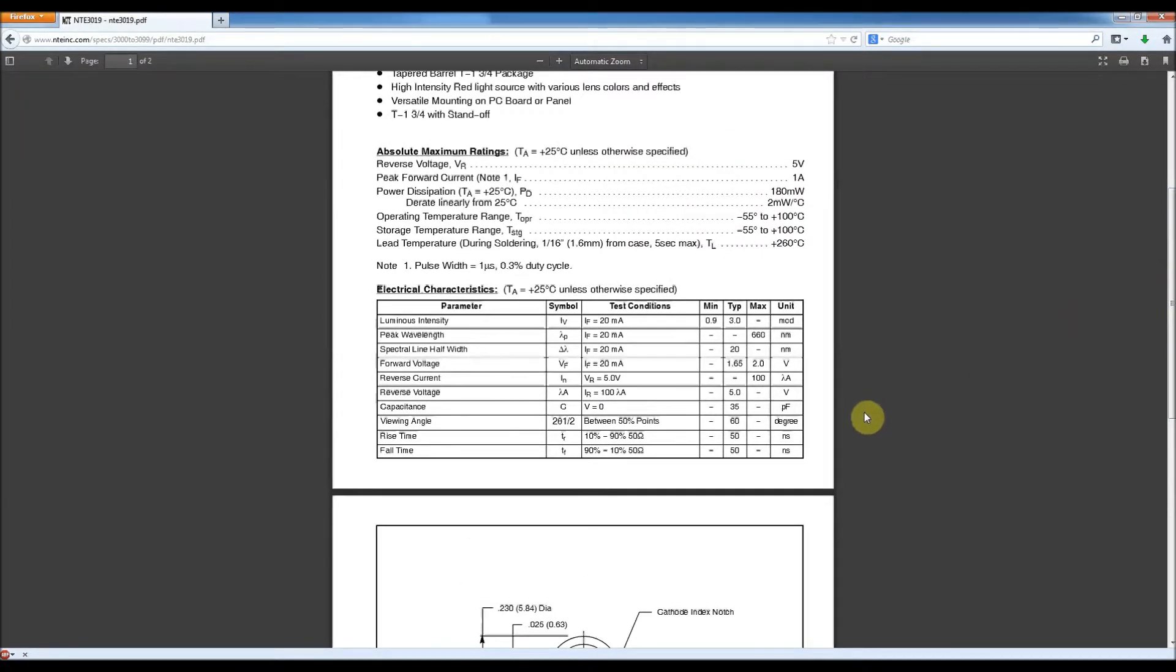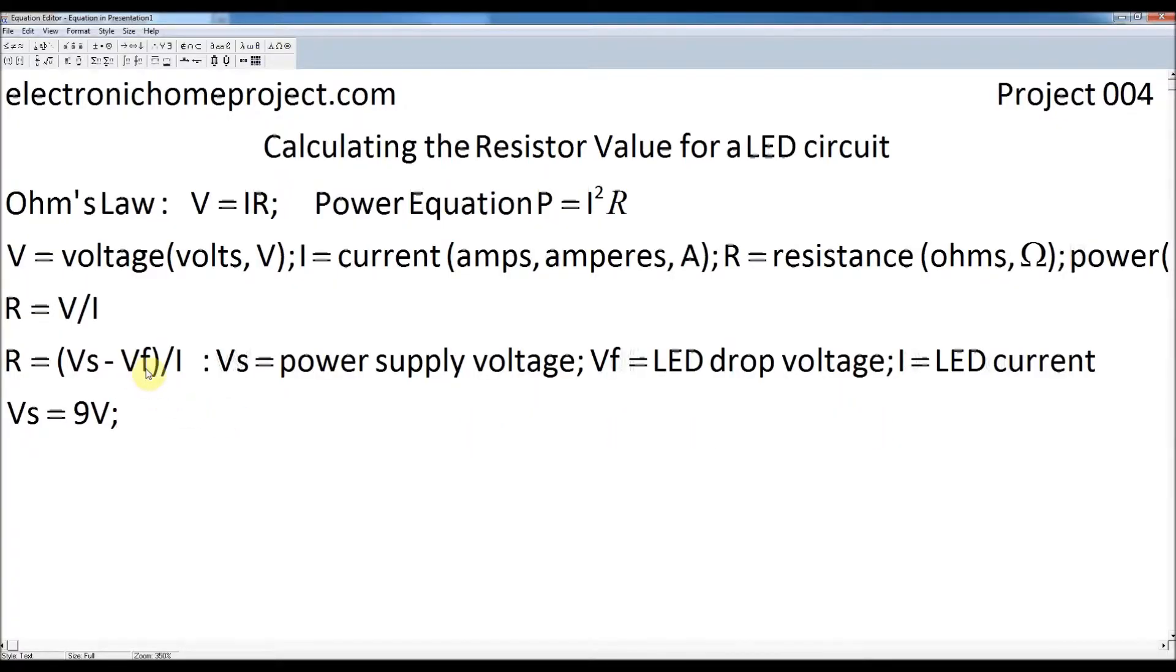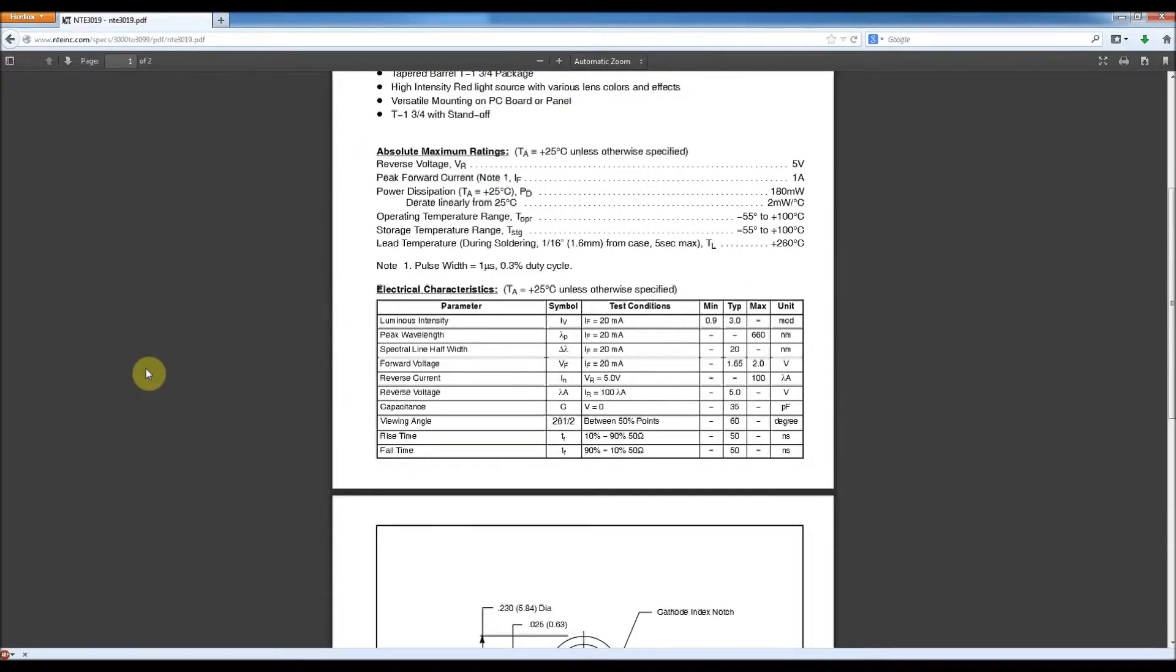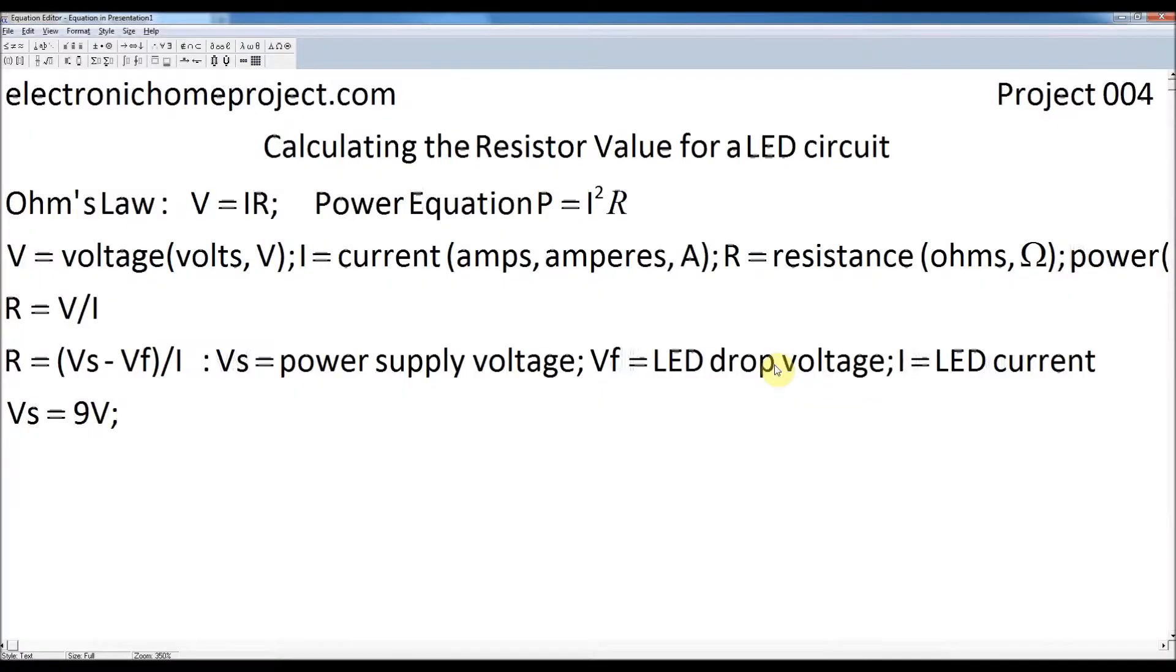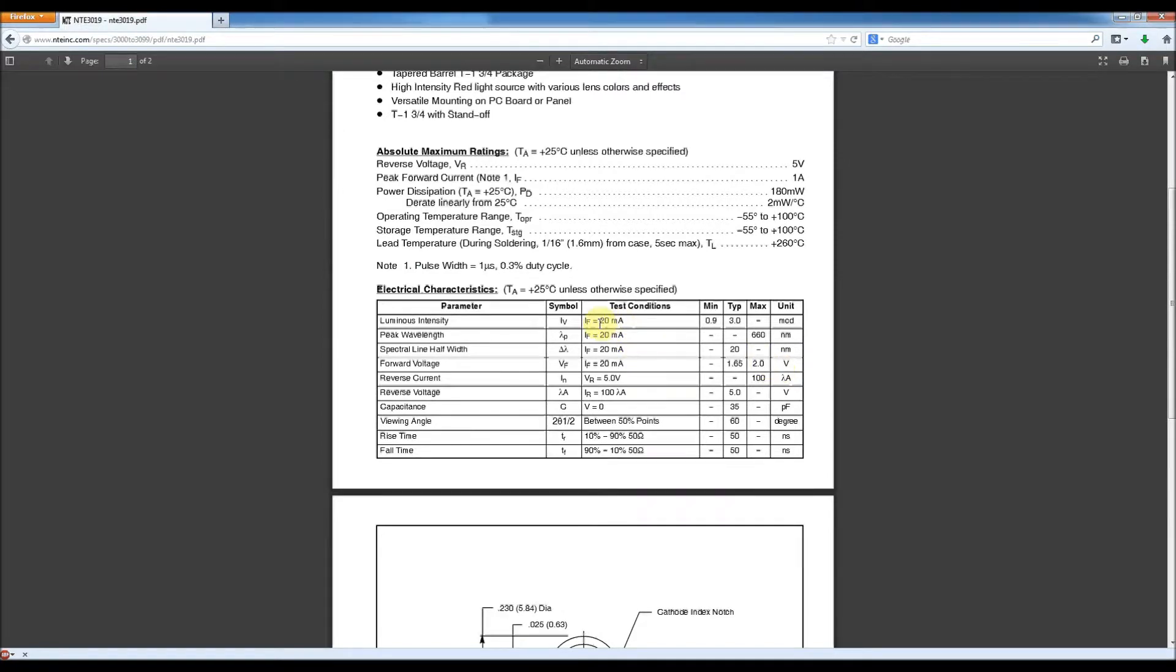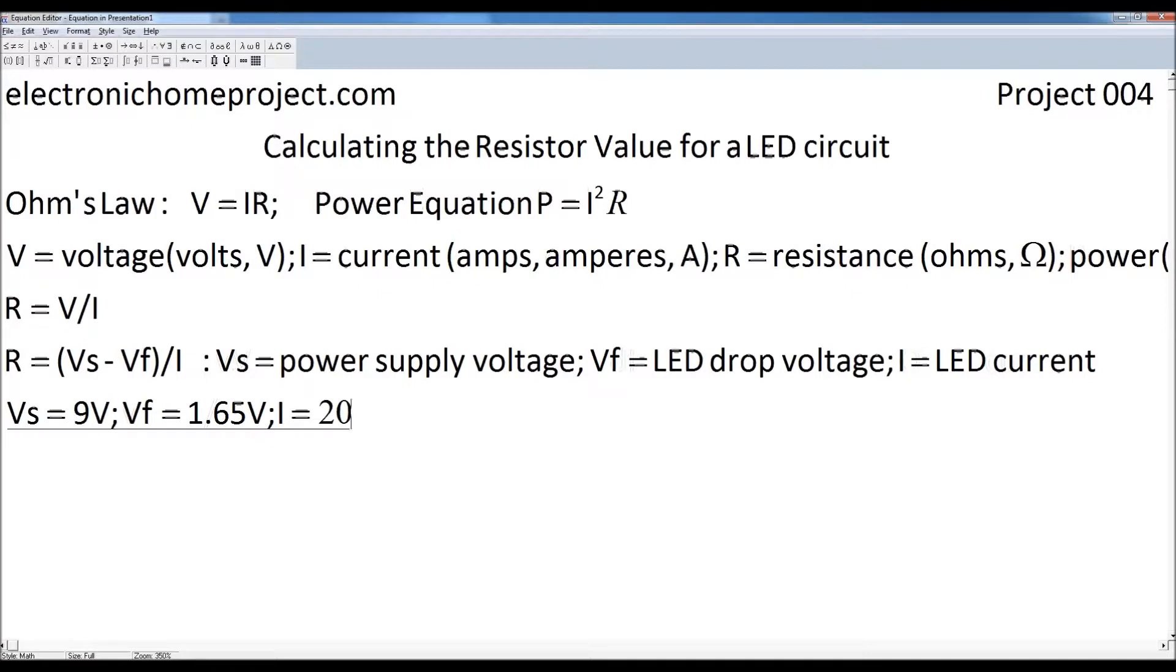So if we look at the values we're looking at, we're looking at Vf. Okay. And so the forward voltage is here, Vf. Typical values are 1.65 volts. So Vf, 1.65 volts. And the other thing we need to know is the LED current. And looking at the typical values here, If is 20 milliamps. Milliamps. Okay. Which is 0.02 amps.